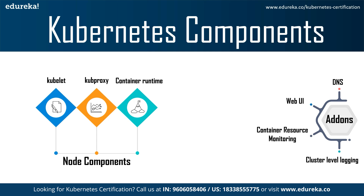The first add-on is DNS. While other add-ons are not strictly required, all Kubernetes clusters should have cluster DNS as many examples rely on it. Cluster DNS is a DNS server that serves DNS records for Kubernetes services, in addition to the other DNS servers in your environment. The second is Web UI (Dashboard), a general-purpose web-based UI for Kubernetes clusters that allows users to manage and troubleshoot applications running in the cluster. Third, container resource monitoring records generic time-series metrics about containers in a central database and provides a UI for browsing the data. The fourth is cluster-level logging, a mechanism responsible for saving container logs to a central log store with a search or browsing interface.